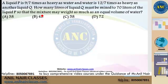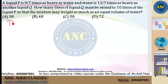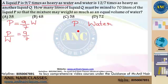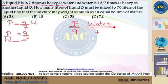Now please see another variety of questions in this topic. The question says liquid P is 9/7 times as heavy as water. That means P divided by water is 9/7. In simple language, if liquid P is the first parameter and water is the second, if there are 9 liters of liquid P then water will be 7 liters.